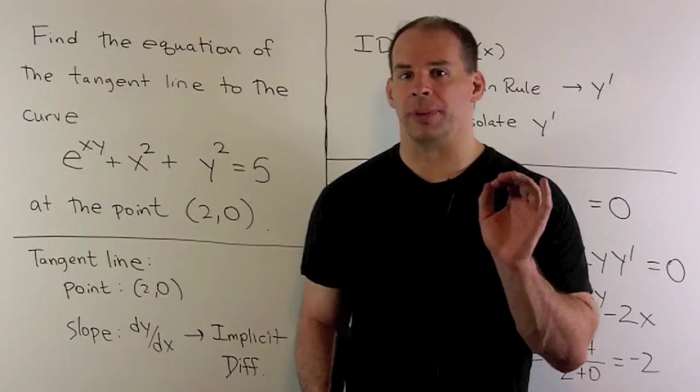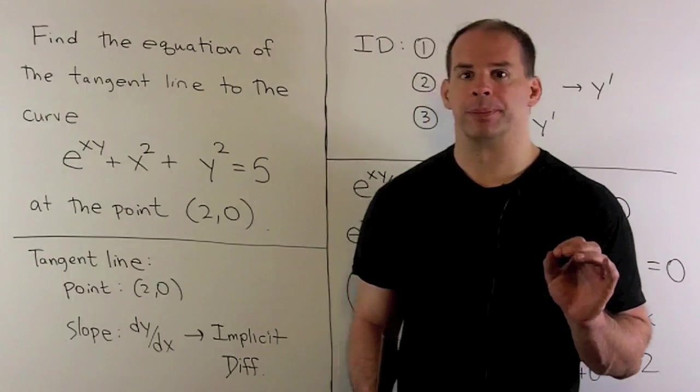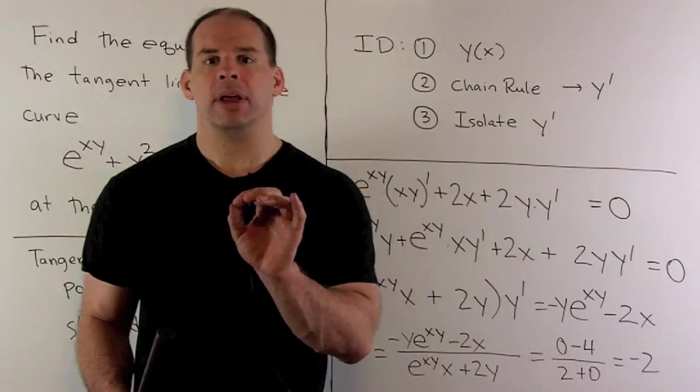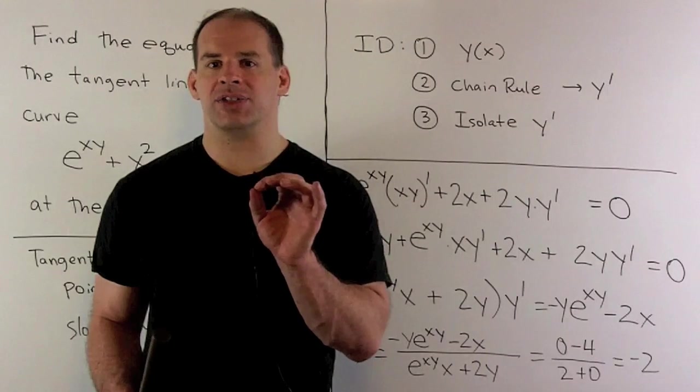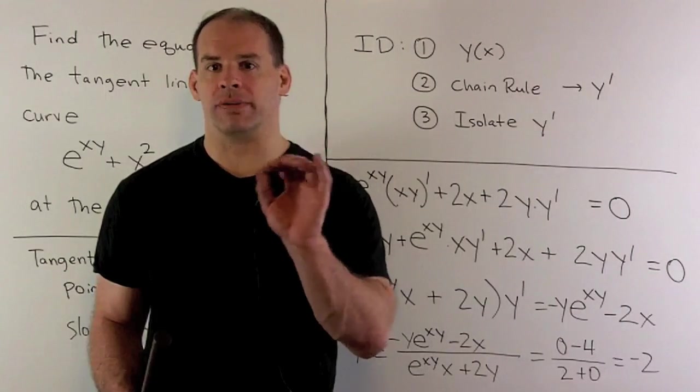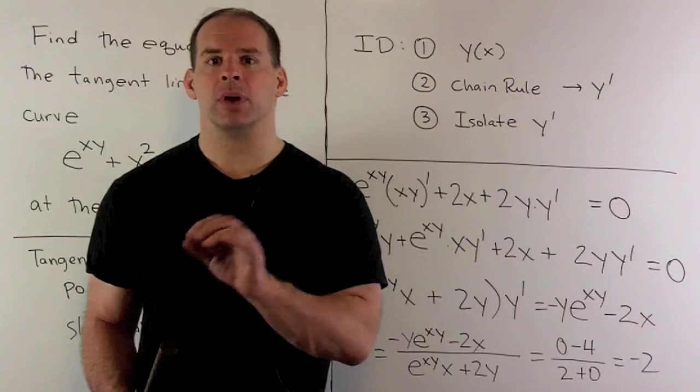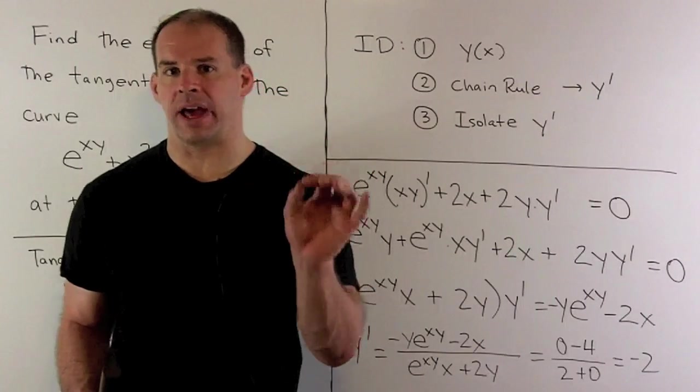To get the slope of the tangent line, we're going to use implicit differentiation. If I want a tangent line, we don't need the entire curve. All I need is enough of our curve in a neighborhood of our point. So the idea is we're going to throw away most of our curve. What's left over, we're hoping, is going to be y as a function of x.